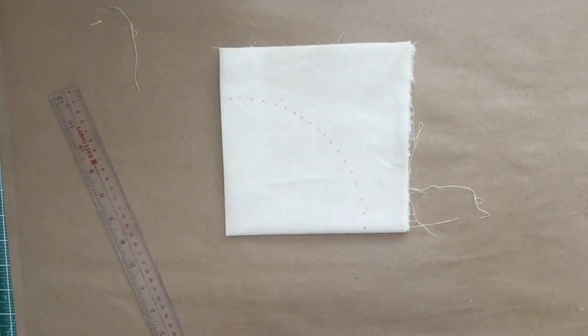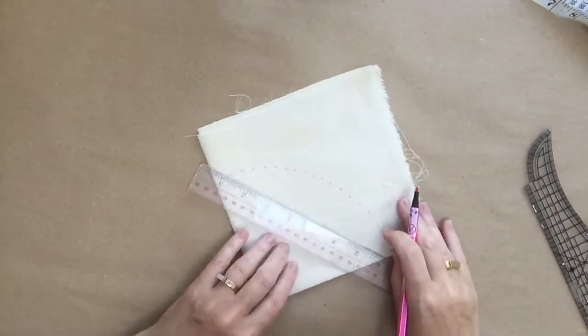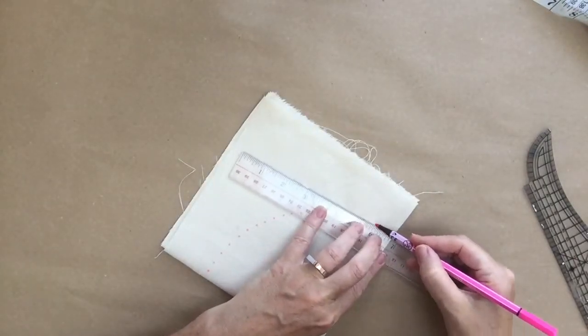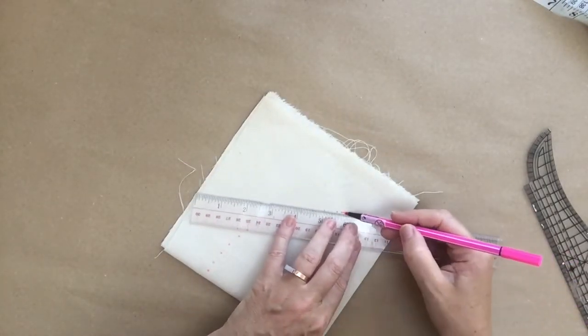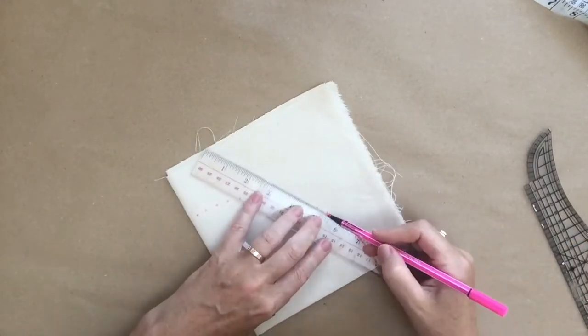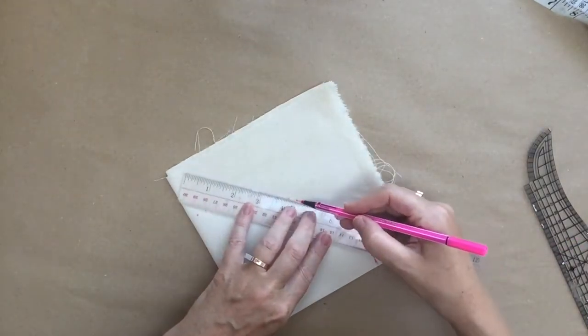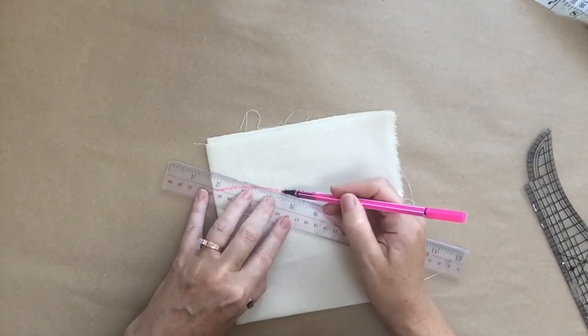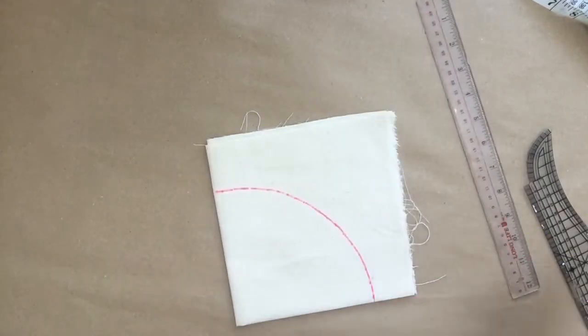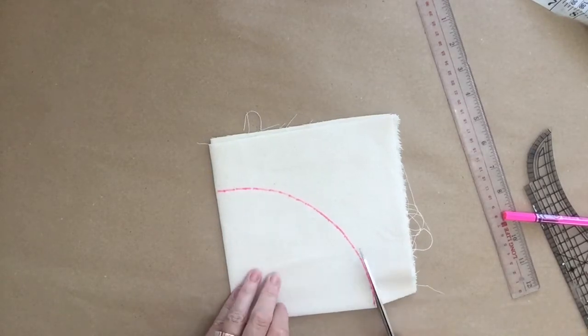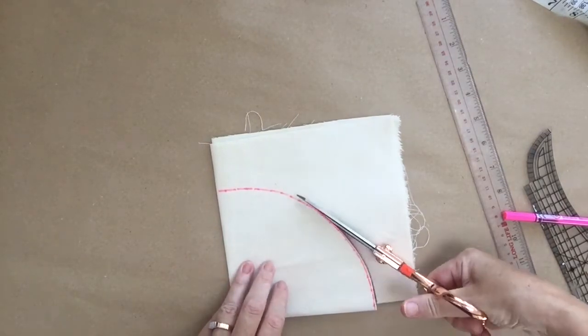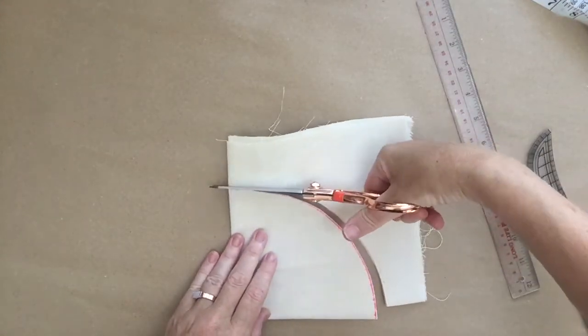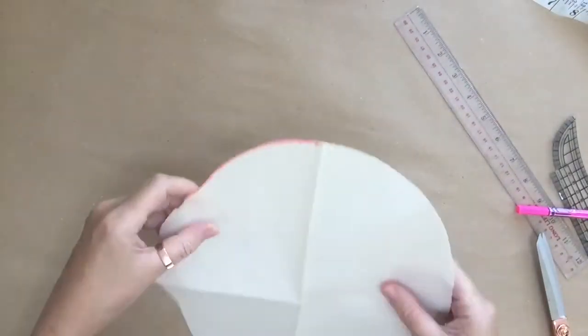There's the circle shape now, and I'm just going to join it up so you can see it a little bit better. Once you've got that circle shape, you can cut that out, and then when you unfold it, you get the full circle.